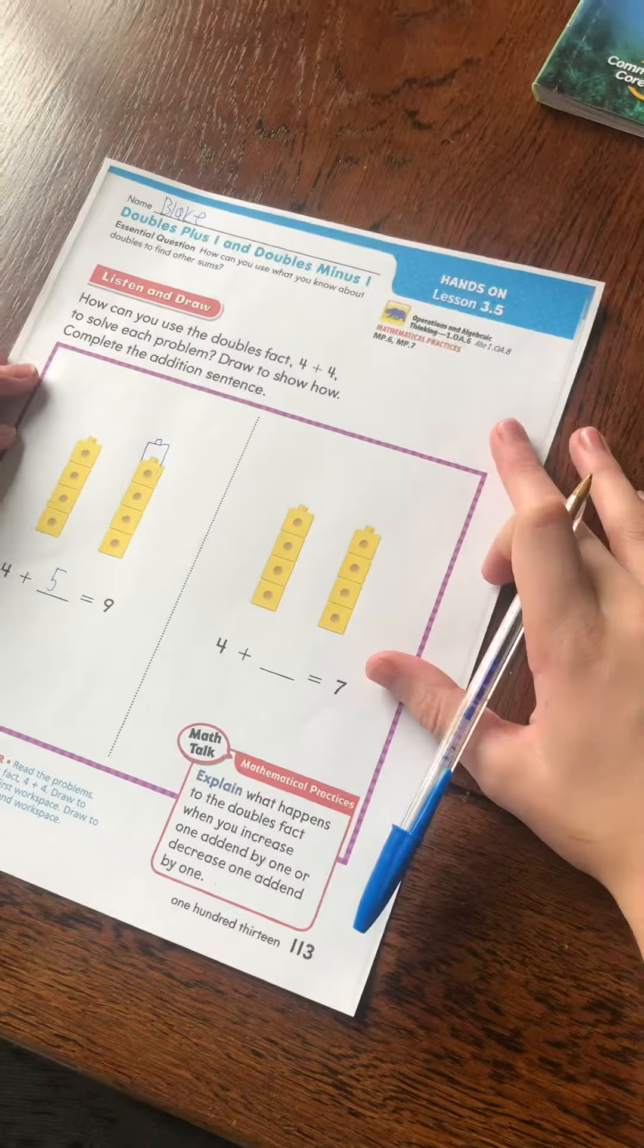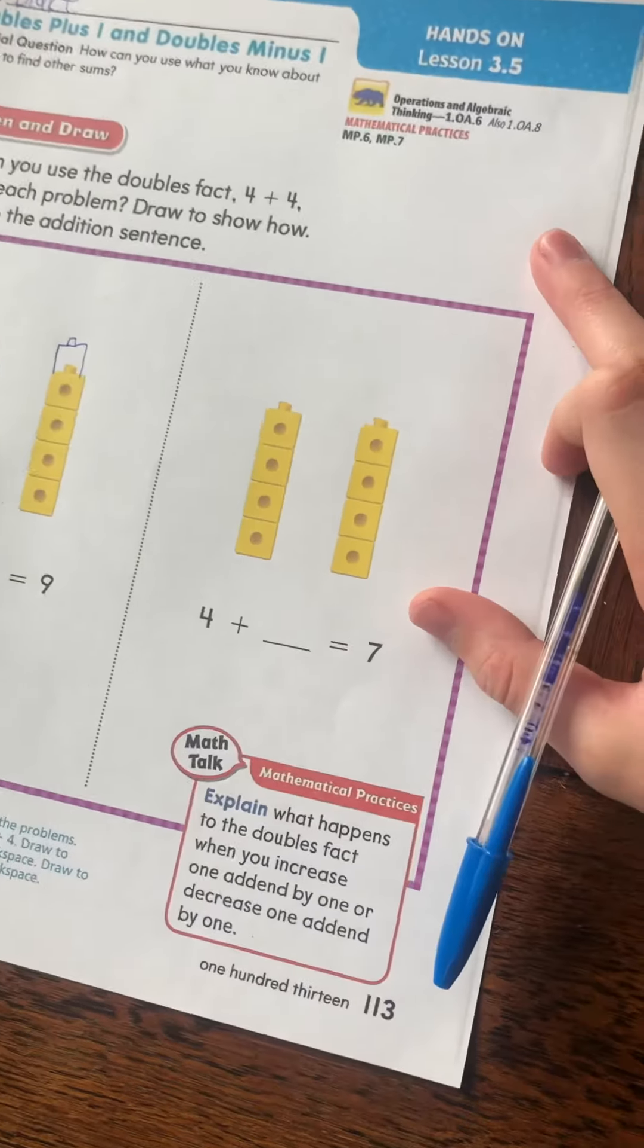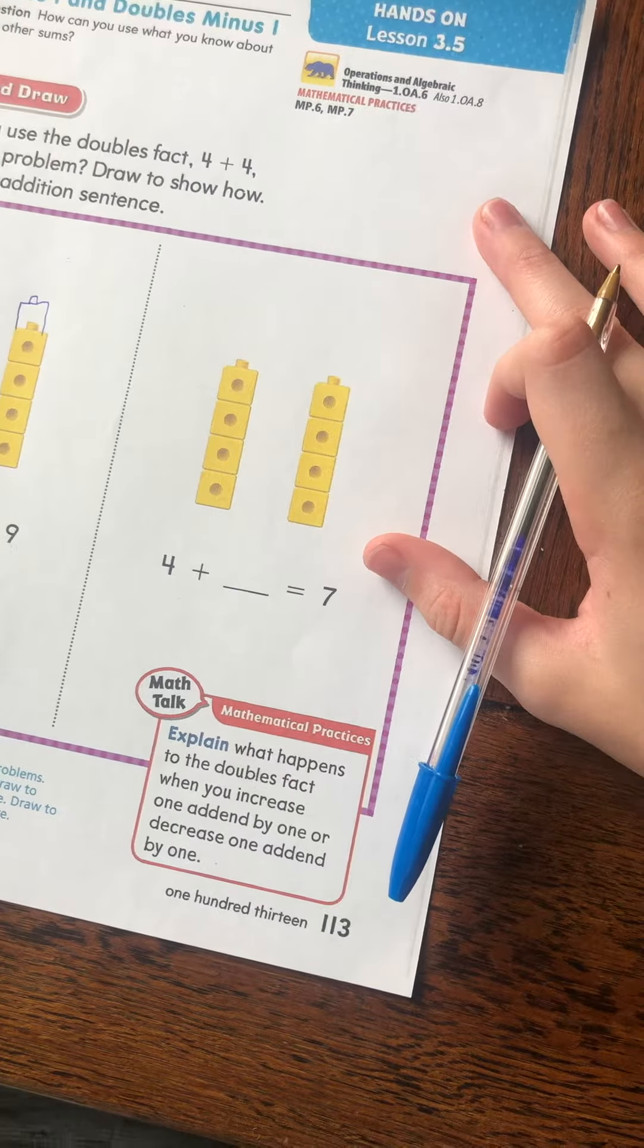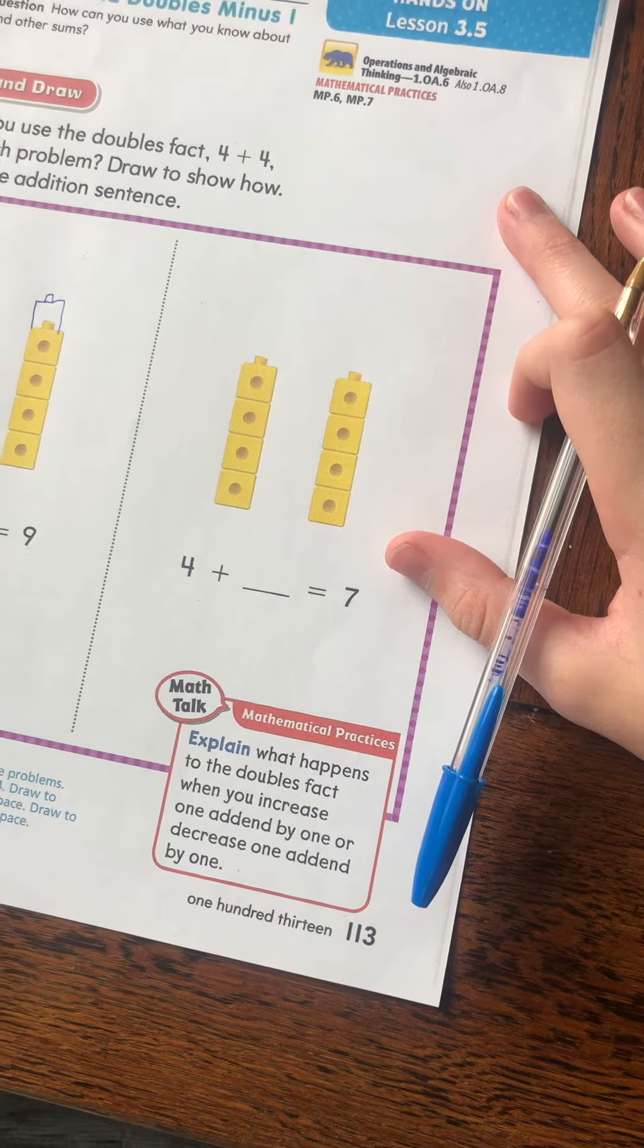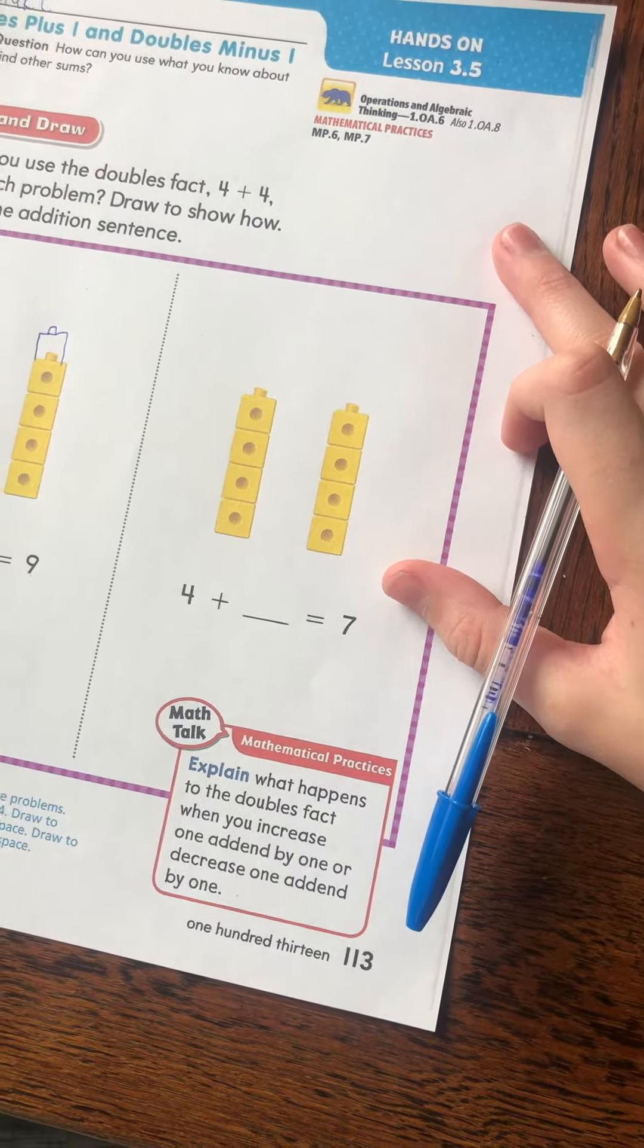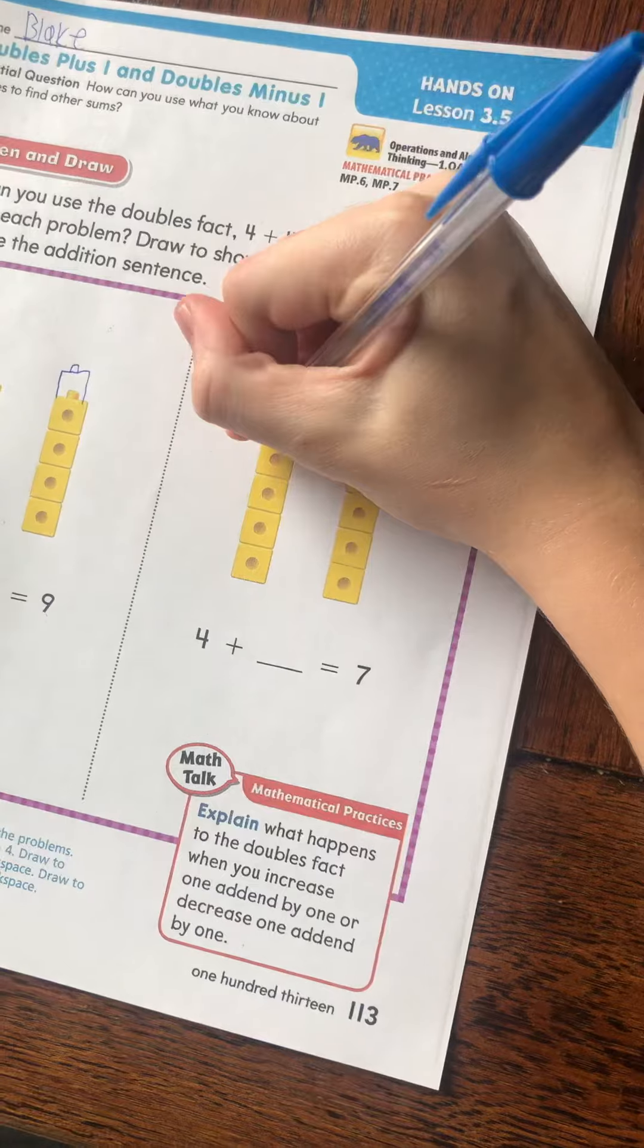Okay, now over here, 4 plus blank equals 7. So 7 is less than 8. And 4 plus 4 equals 8. So what are we going to do here? I think we need to take away a block. Let's just cross this one out.